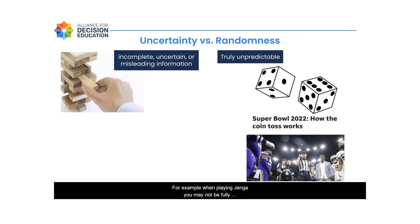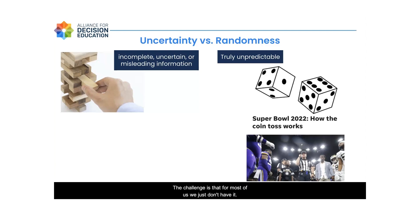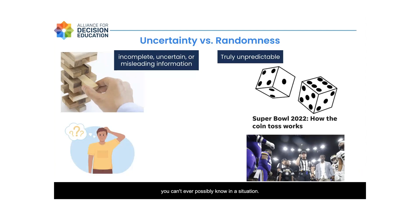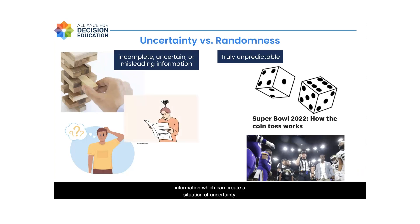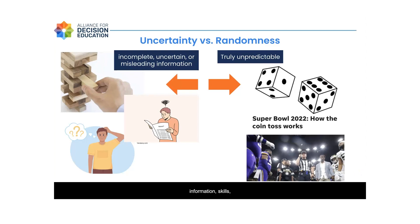For example, when playing Jenga, you may not be fully versed on all the laws of physics. We might not know exactly how each piece is being pressed together. If we had that information, it would be useful in predicting the outcome of removing certain pieces. You could also have uncertainty because of things you can't ever possibly know — like what someone else will do or decide. Other times, there may be deliberately misleading information. We want to distinguish between events that are truly random versus events where you simply don't have the information, skills, or abilities to make predictions, leading to a heightened state of uncertainty.